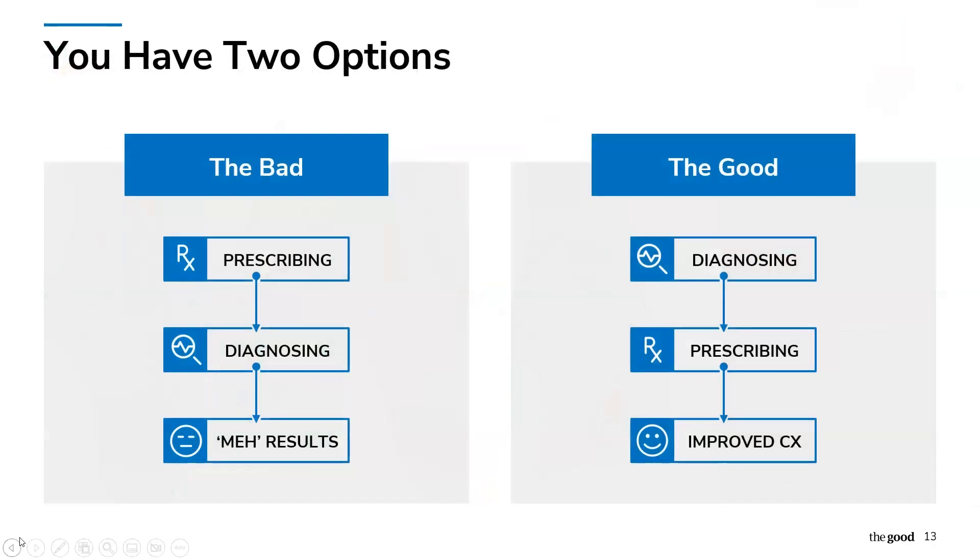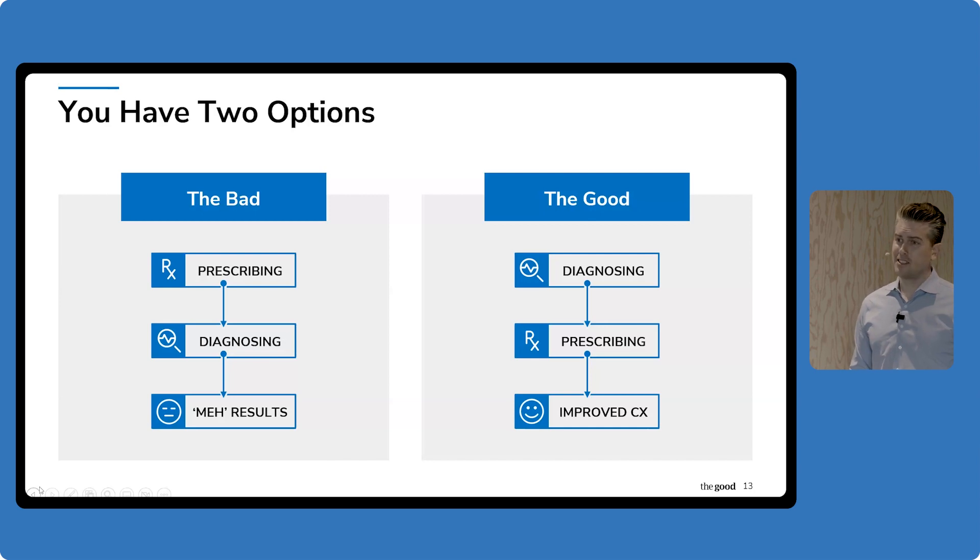So you really have two options here. Applying best practices is really like prescribing before you diagnose. The bad way to do this is if you were to walk into a doctor and say, 'I think I need X drug,' and they said, 'great, here's a prescription. Go ahead and get it.' And they didn't do any diagnosis. You would not only have bad results, but that's considered malpractice. It's actually illegal. It's the same thing that you really should be diagnosing before you prescribe. You have to understand what people are doing on your site and why. And that's really the underpinnings of CRO.